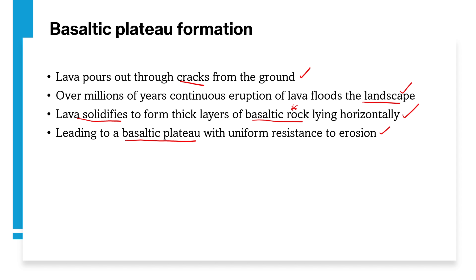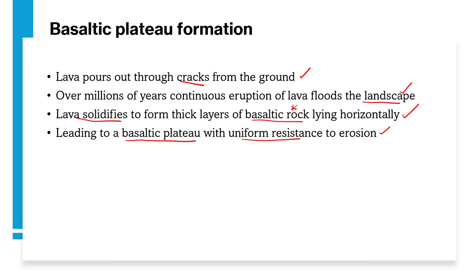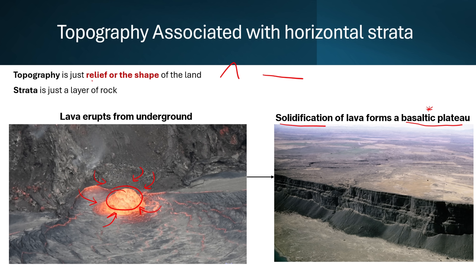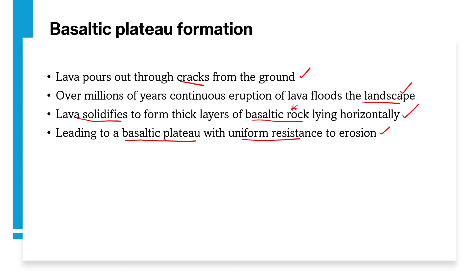A basaltic plateau has uniform resistance to erosion, meaning all parts of the rock are equally able to resist agents of erosion. To summarize: lava pours out from the ground, solidifies, forms thick layers of basaltic rock lying horizontally, and this leads to the formation of a basaltic plateau.